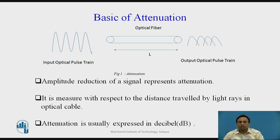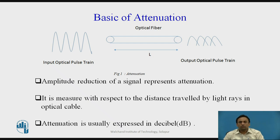If I have encoded data in a pulse train — a sequence of zeros and ones — and I send this through an optical fiber, at the output end the shape of the pulse changes. There is a reduction in the amplitude and power level of the pulses, and at the same time the duration of the pulse also increases. These effects are known as attenuation and dispersion.